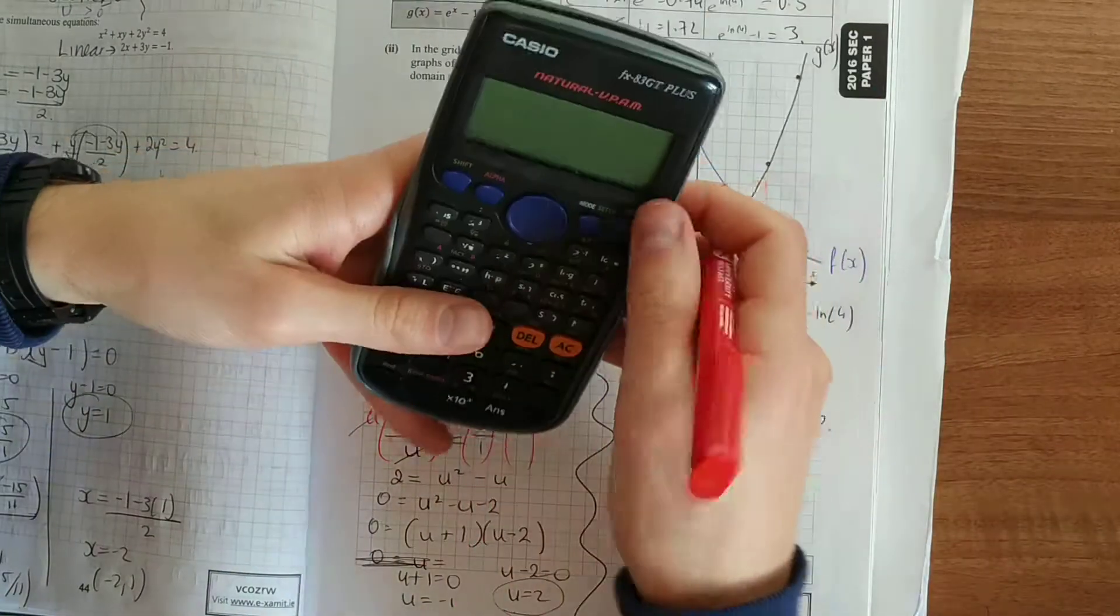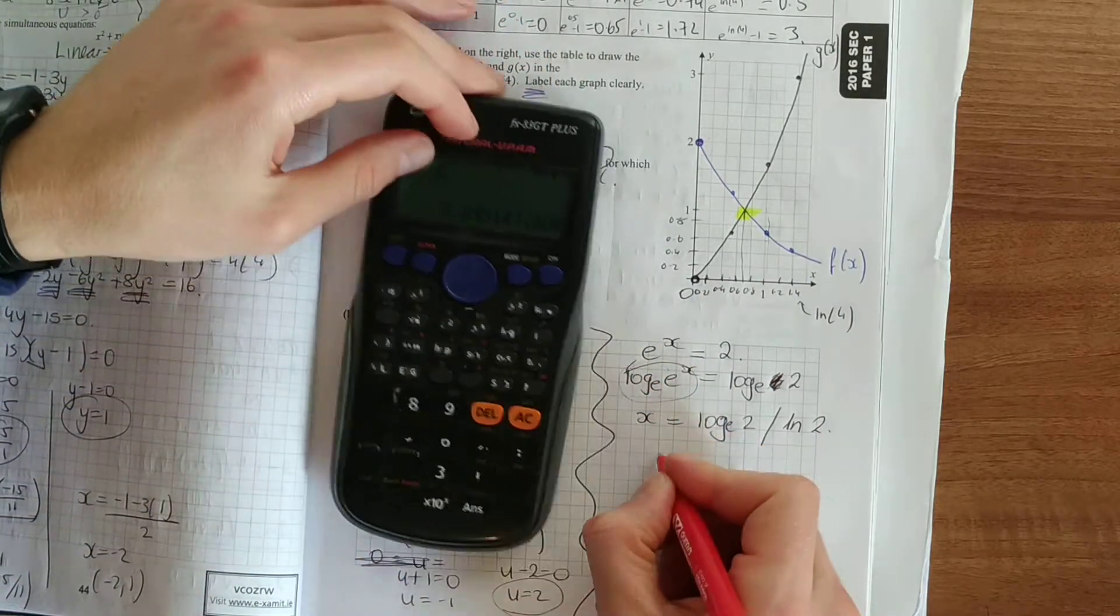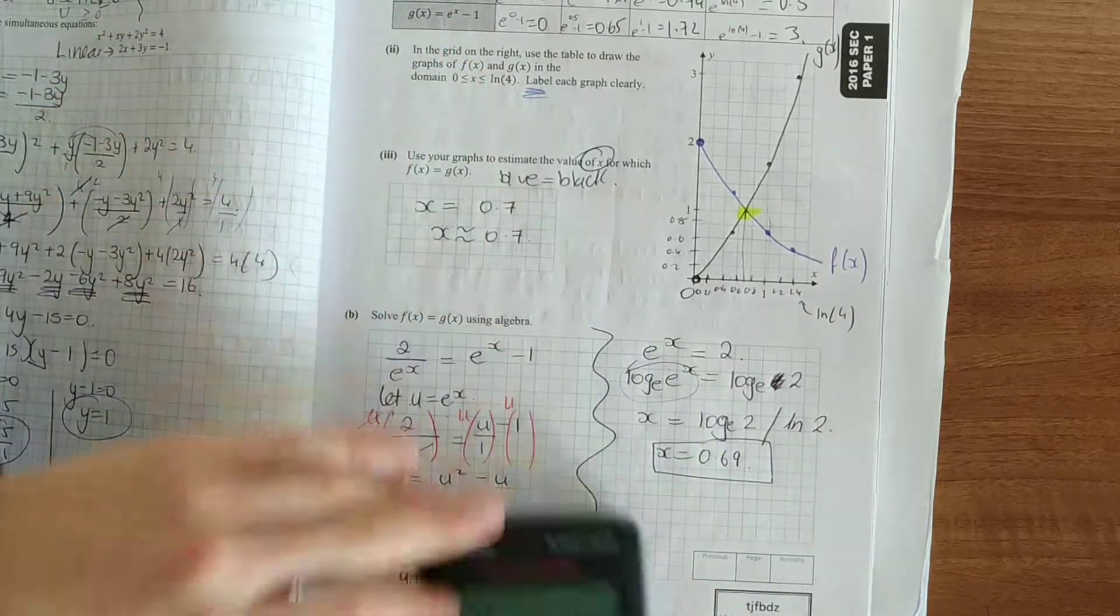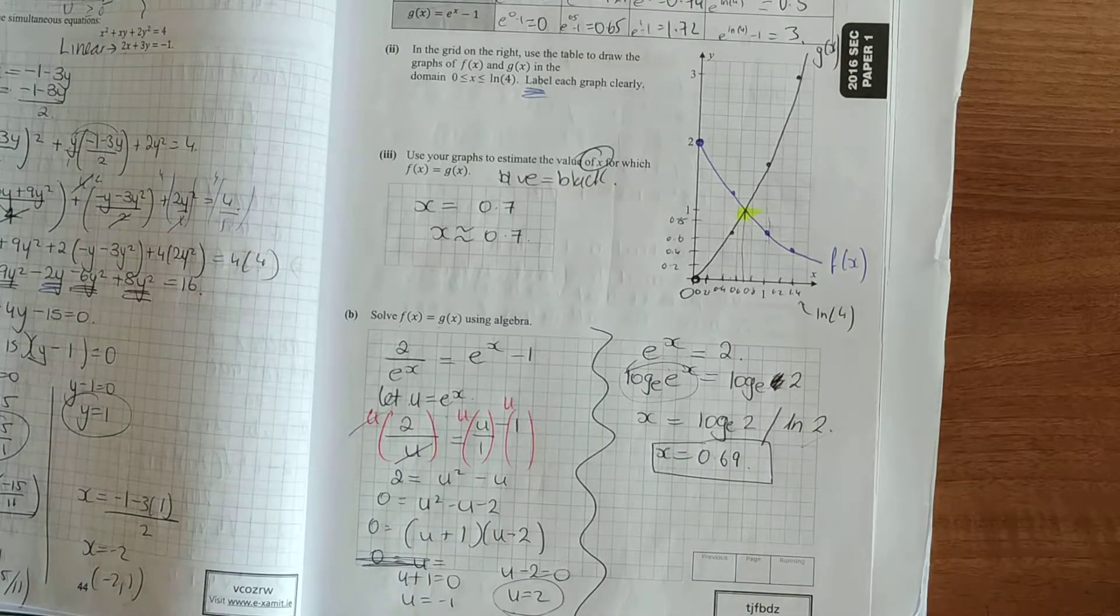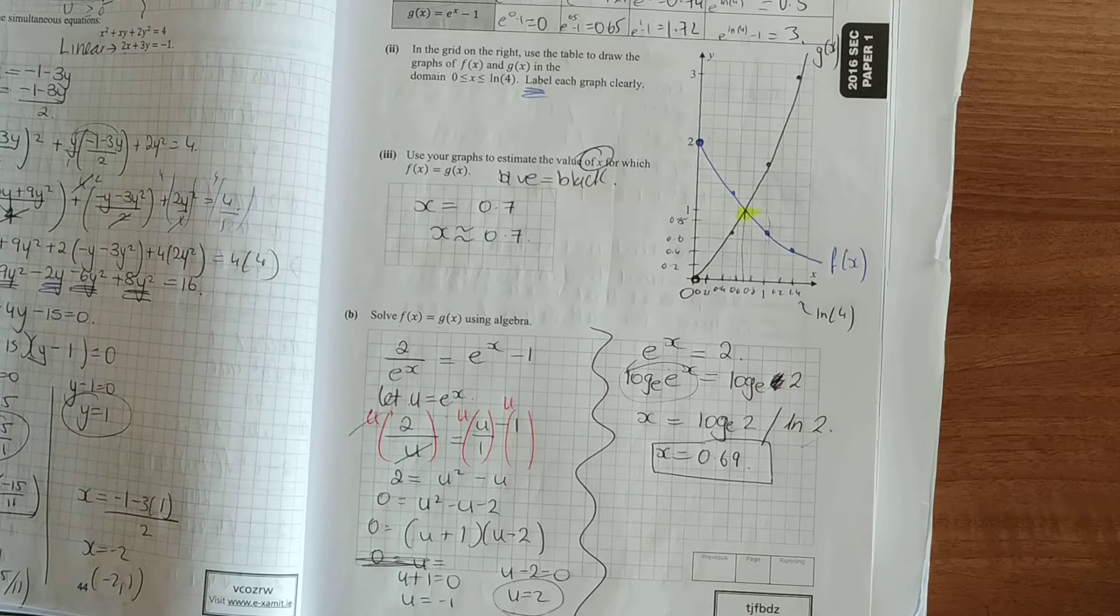And if you did want to check how accurate you are, just put ln of 2 into your calculator. I think it's 0.69. So, pretty good. We know we're right. That answer there is perfectly acceptable. So, as we say, don't practice until you get it right. Practice until you cannot get it wrong. Thank you.